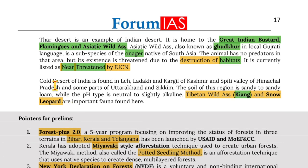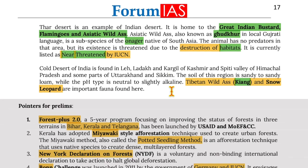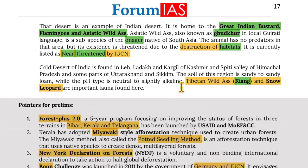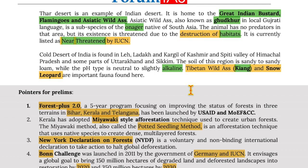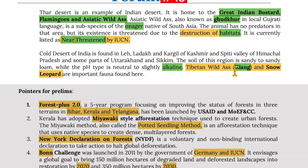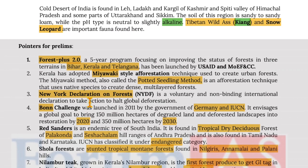Cold deserts of India are found in Leh-Ladakh, Kargil of Kashmir, Spiti Valley of Himachal Pradesh, and some parts of Uttarakhand and Sikkim. The soil of this region is sandy to sandy loam and the pH is neutral to slightly alkaline. Tibetan wild ass (kiang) and snow leopard are important fauna found here.